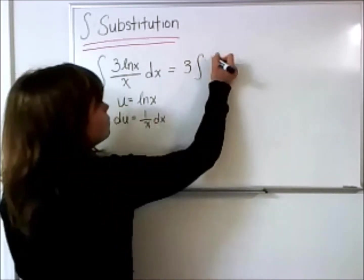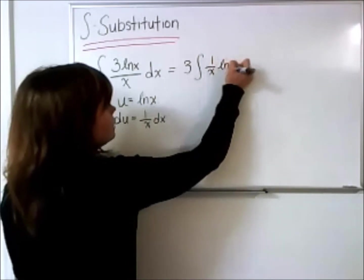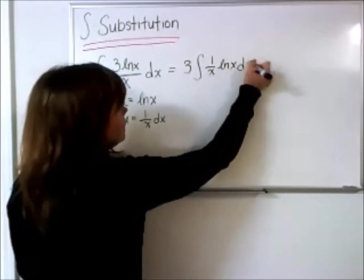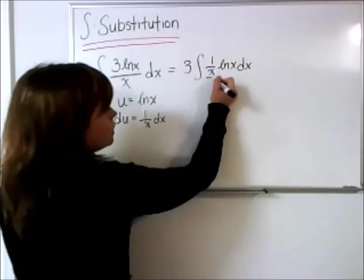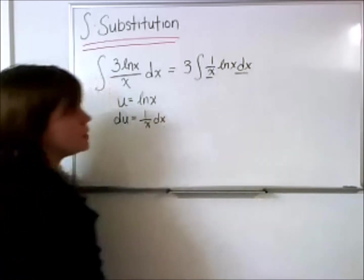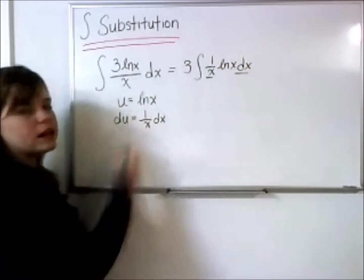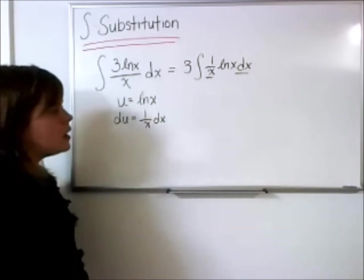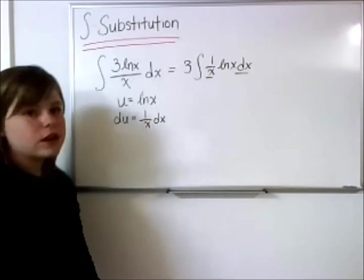and then we're left with 1 over x, natural log of x, and that dx. So, here and here, those two pieces are actually right here in our du, which will allow us to substitute the du right into our integral,